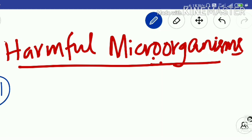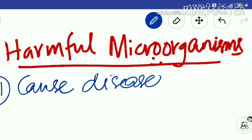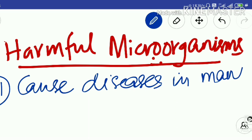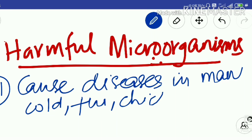The first harmful activity of microorganisms is that they cause several diseases in human beings. There are a large number of diseases caused by microorganisms, starting from cold, flu, chicken pox, smallpox, measles, leprosy, tuberculosis, and so on. There are bacterial diseases as well as viral diseases.